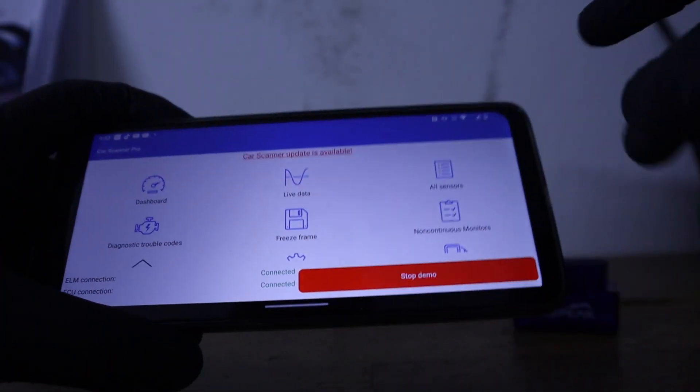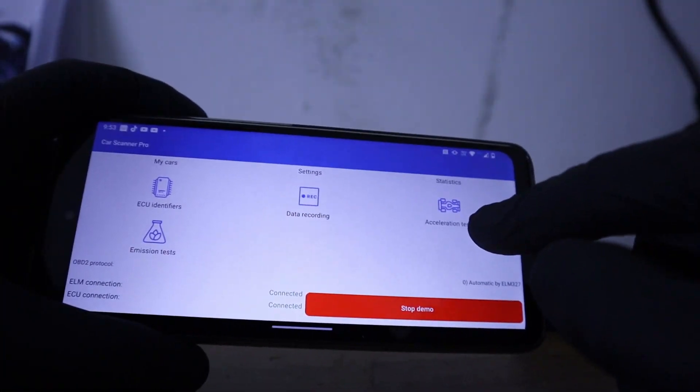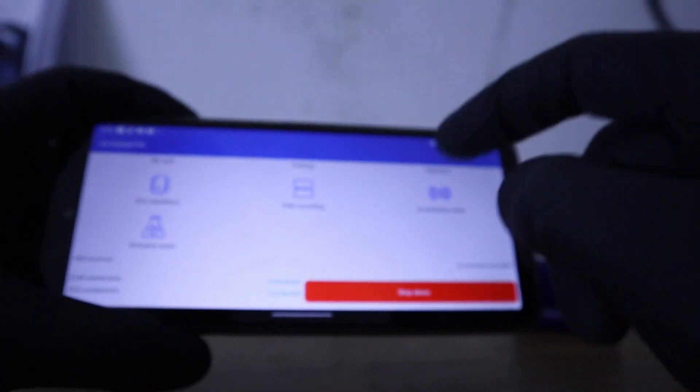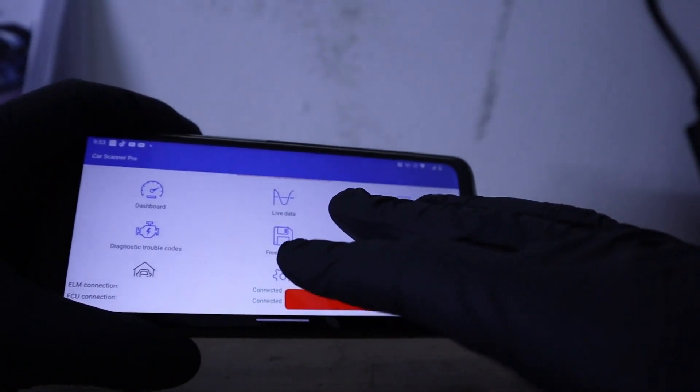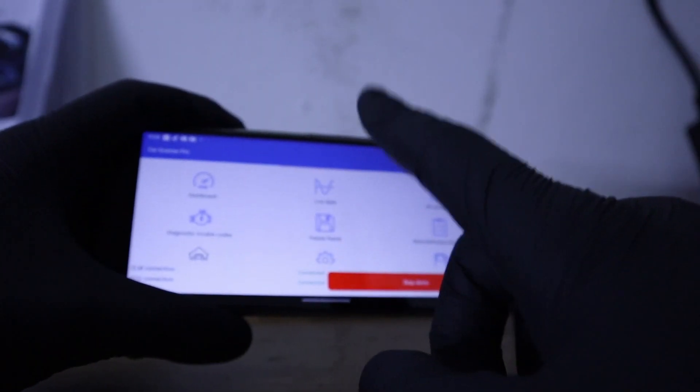It also has a bunch of other stuff. You can look at data from the sensors, you can do acceleration test, you can do emission test. And for some vehicles, this app can also do ECU coding, which means unlocking hidden features.